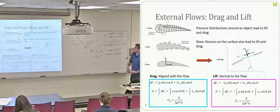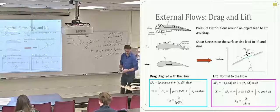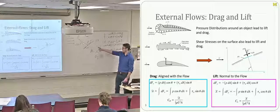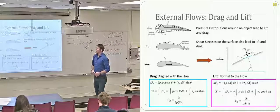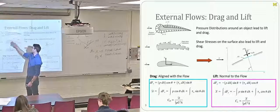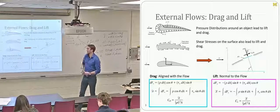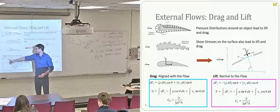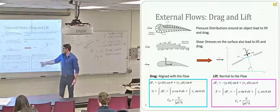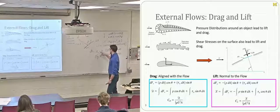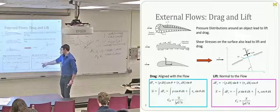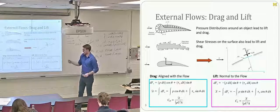Why go through this process just to write out the x and y components of this little force? Because if we integrate over the entire surface of whatever body we have — in this case an airfoil, but it could be any shape — we end up with expressions for the total lift and drag. The key point is that this is really just a transformation of coordinates. Pressure and shear stress both show up in both the lift and the drag expressions. So we have shear stress and pressure contributing to both lift and drag.